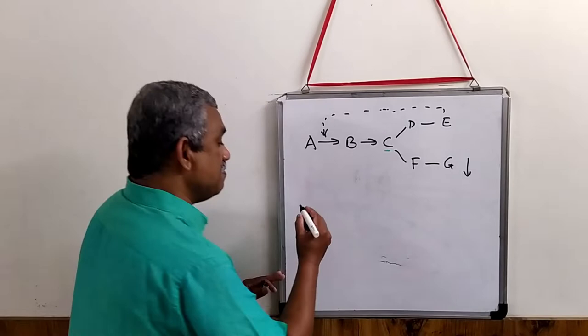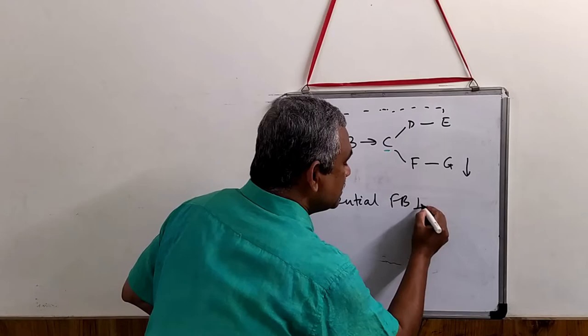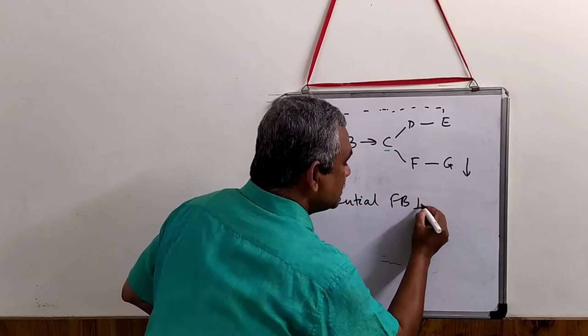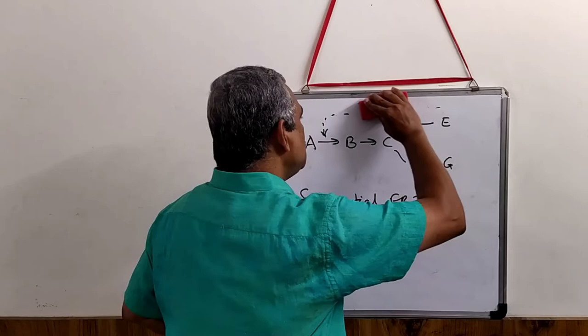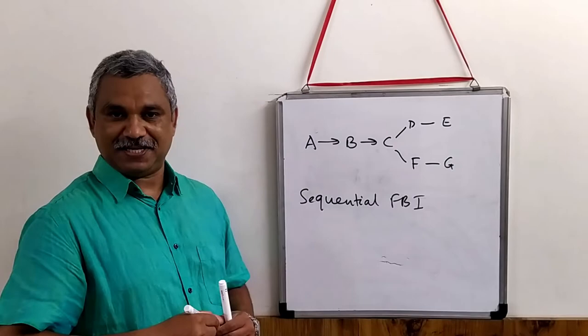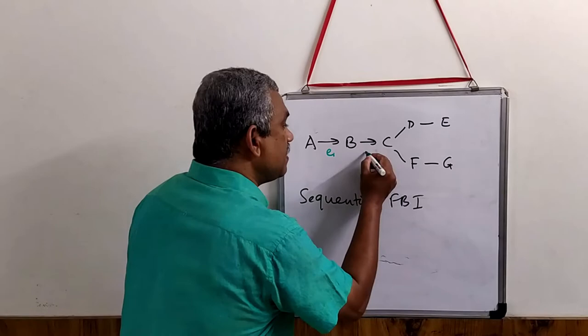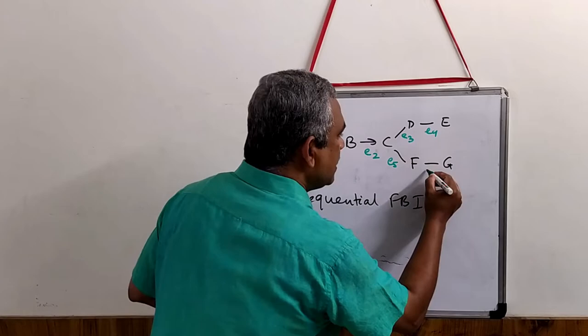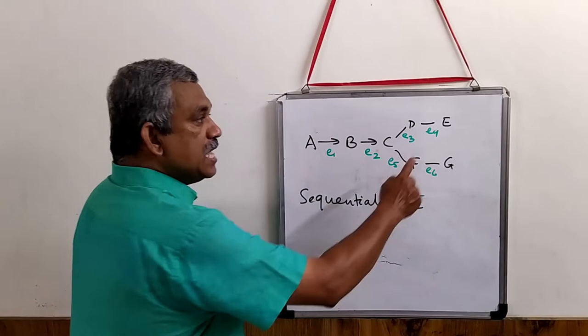A second way to regulate branched pathways is what is known as sequential feedback inhibition. Using the same diagram to understand sequential feedback inhibition: let us denote enzyme 1, enzyme 2, enzyme 3, enzyme 4, enzyme 5, and enzyme 6. What happens in sequential feedback inhibition is that E cannot inhibit enzyme E1 directly, nor can G directly inhibit enzyme E1.